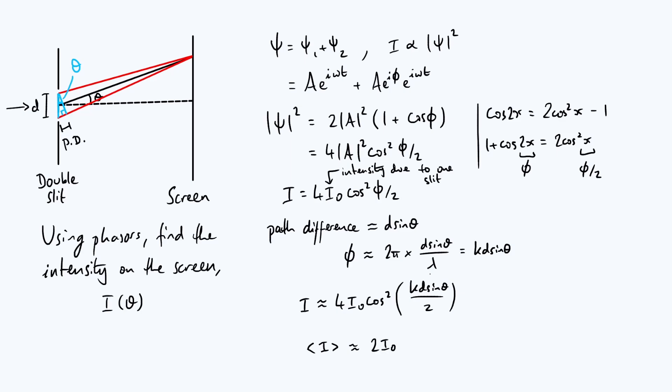That makes a lot of physical sense because we said earlier that I naught was the intensity that you would get from one slit. So if you were to just pretend that you didn't know that interference was something that happened, you might just guess that the overall intensity on the screen was two times I naught because you've got two slits, and that's consistent with the average intensity that we actually do get.